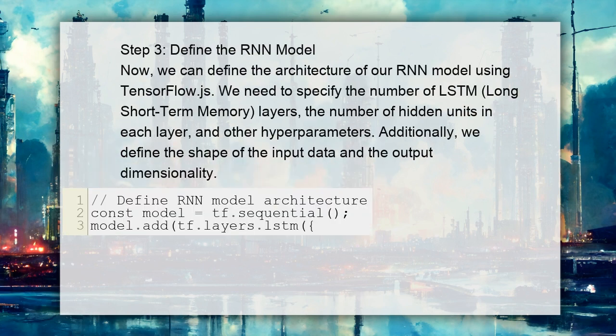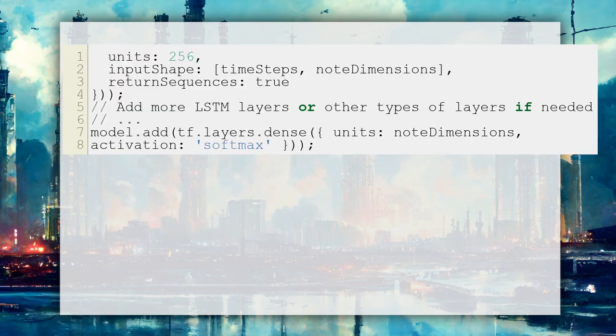Step 3: Define the RNN model. We can define the architecture of our RNN model using TensorFlow.js. We need to specify the number of LSTM (long short-term memory) layers, the number of hidden units in each layer, and other hyperparameters. Additionally, we define the shape of the input data and the output dimensionality. And here is the rest of the code.